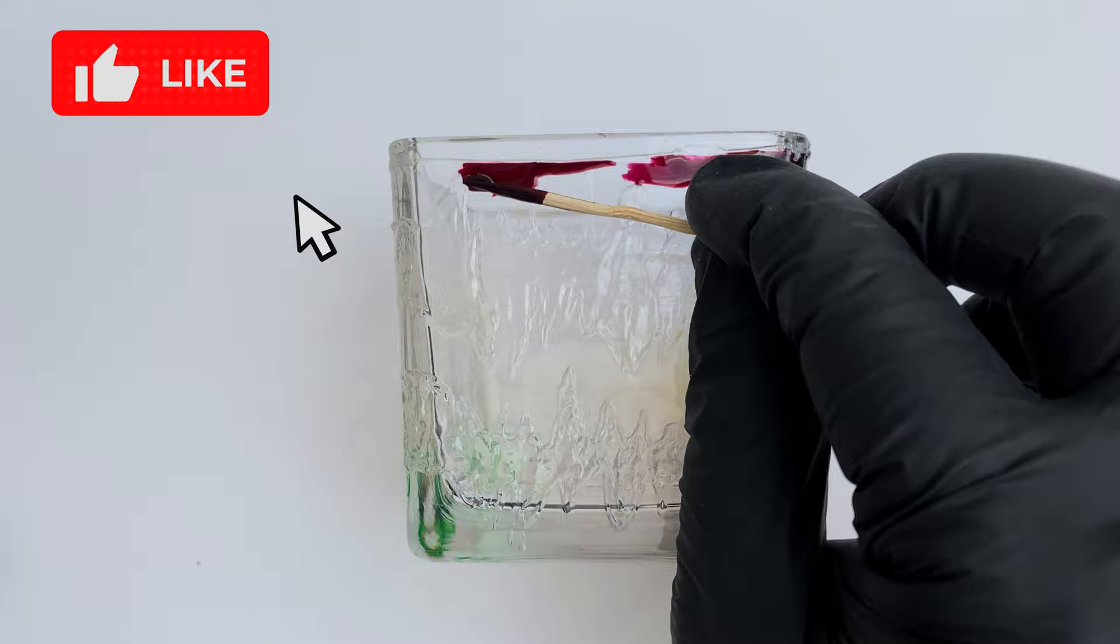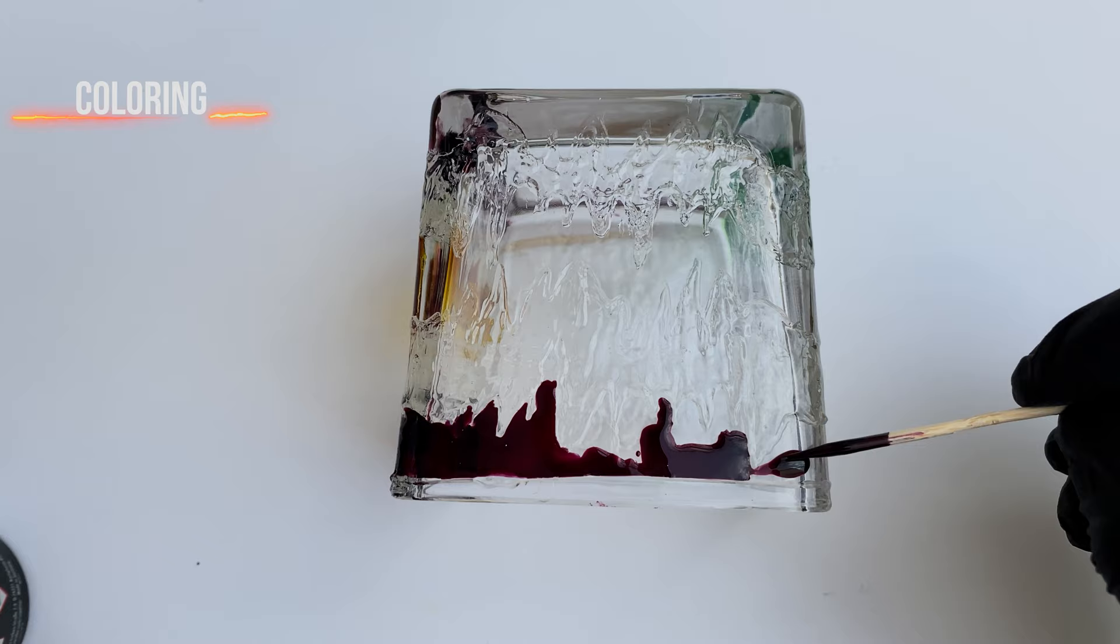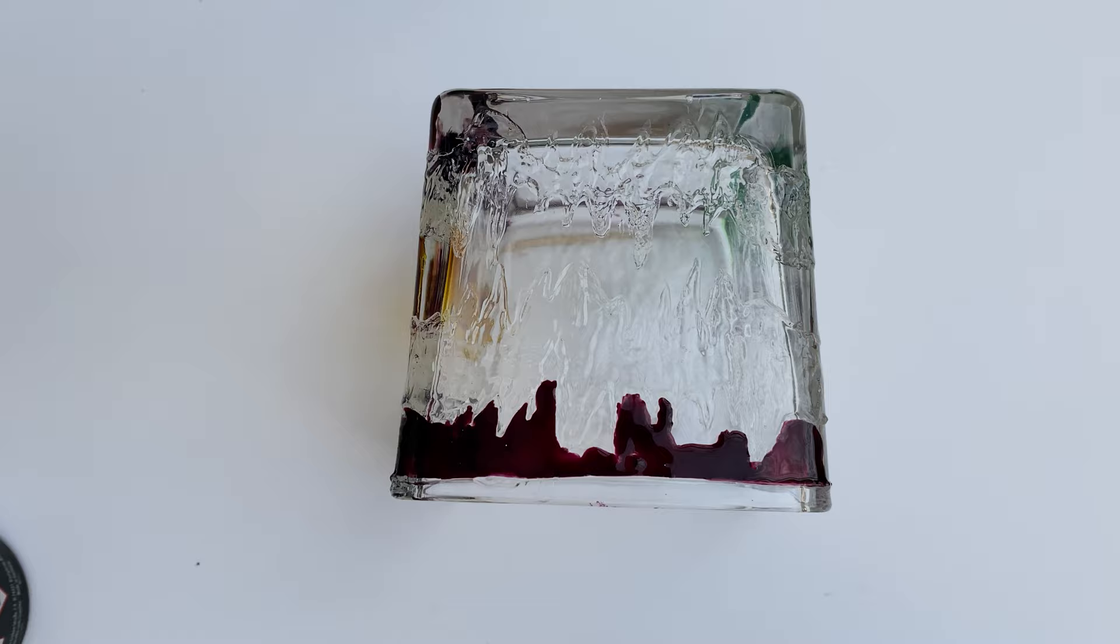The next step is coloring using a toothpick, brush, or anything else that suits you. Try to paint precisely where you want the paint to be to avoid correcting mistakes after you are done with painting.